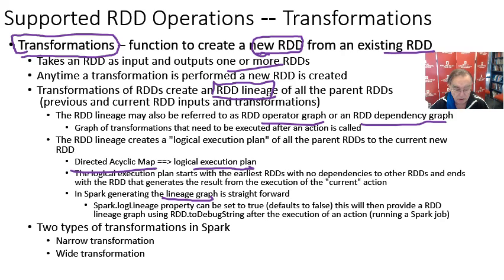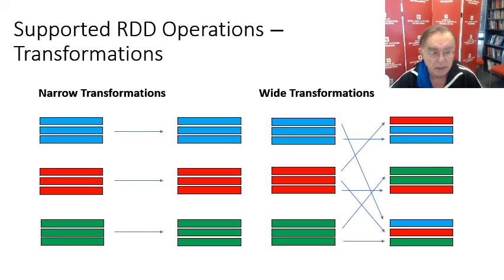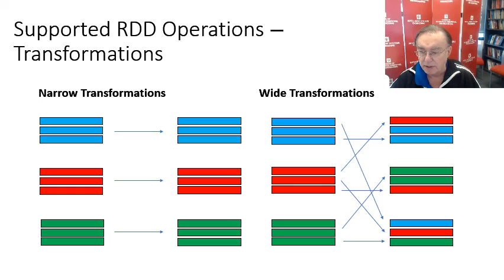The action is running the job, because the action is the final output. Now we have narrow transformations or wide transformations. Wide transformations produce multiple RDDs. Here we have pictures of narrow transformations: three blues become three blues, three reds become three reds, three greens become three greens. And here we have a wide transformation where the reds, blues, and greens are mixed up in some peculiar fashion.